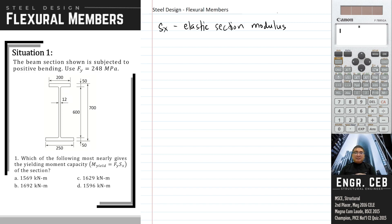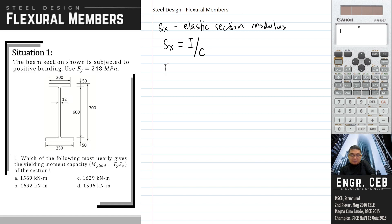In solving the elastic section modulus, that is simply Sx equals I over c, where c is the farthest distance from the neutral axis to the extreme fiber. There is I, that is the moment of inertia. For this particular problem, the default axis of bending is the major axis, which is the x-axis, so this moment of inertia is with respect to the x-axis.